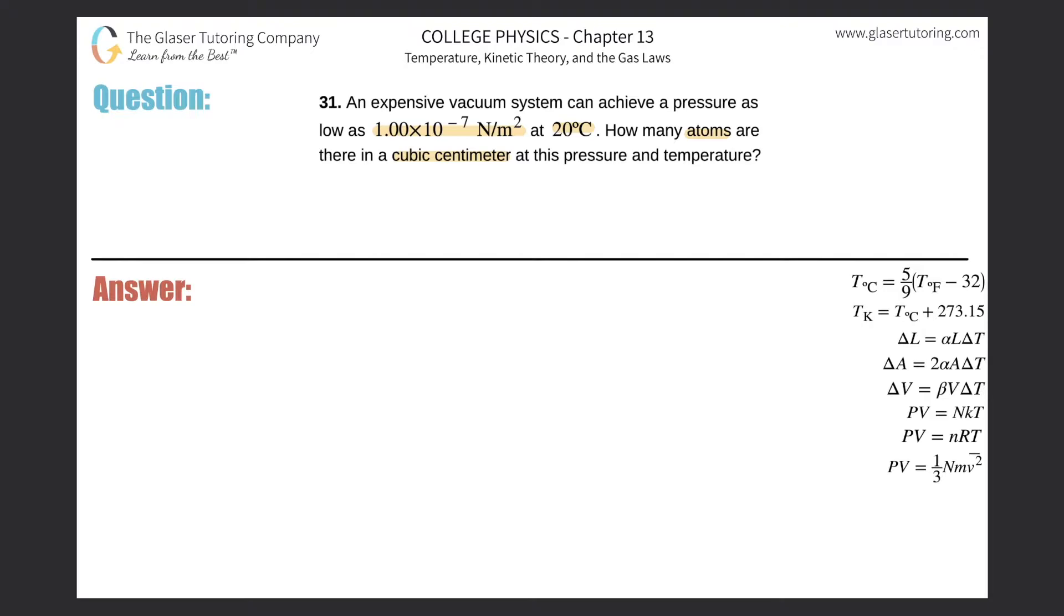Alright. So if you're understanding the nature of what's given in the problem, the conditions are not changing here, right? They're not saying we start with some initial set and now we have some final set. It's just saying calculate the number of atoms. They're asking how many atoms are there at this volume, at this pressure, at this temperature. Anytime that's the case, you know you're going to be dealing with the ideal gas law in one variant or another.